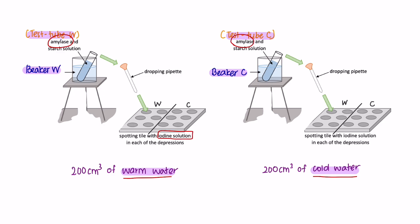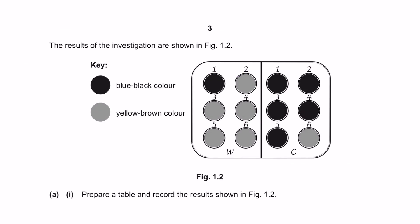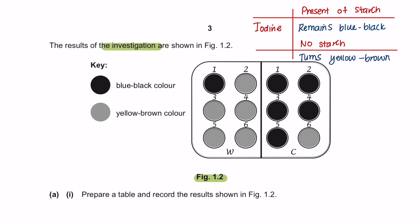To test that, we are going to use iodine solution and spot the color change. So these are the results of the investigation shown in figure 1.2. Just remember that if there is presence of starch, the iodine will remain blue-black. And if there is no starch, the iodine will turn yellow-brown.